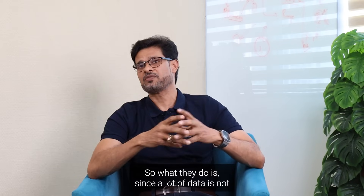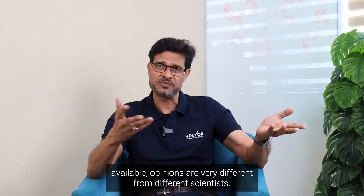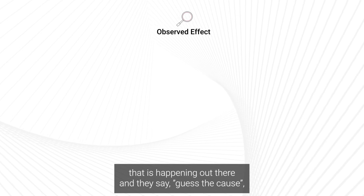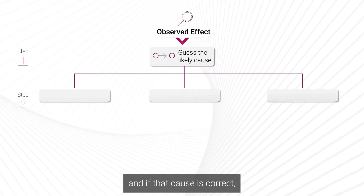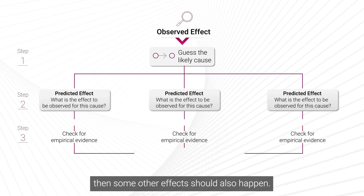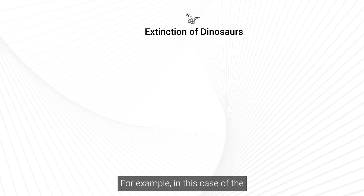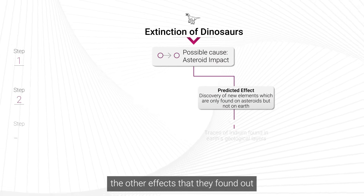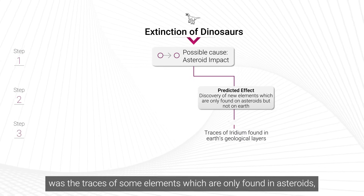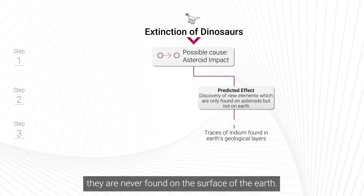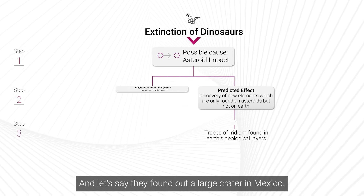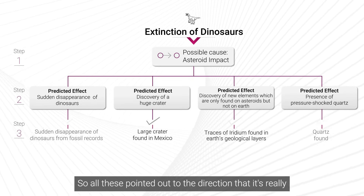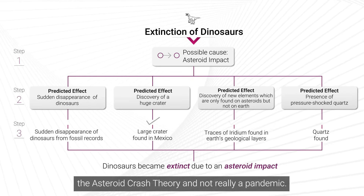They follow a particular methodology called the hypothetical deduction method. Since a lot of data is unavailable and opinions differ, they observe an effect, guess the cause, and reason that if that cause is correct, other effects should also exist. In the asteroid impact hypothesis, they found traces of elements only present in asteroids — never found on Earth's surface — and a large crater in Mexico. All of this pointed to the asteroid crash theory rather than a pandemic.